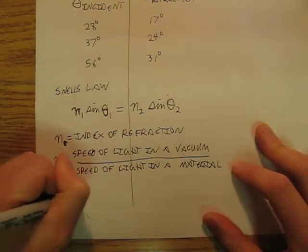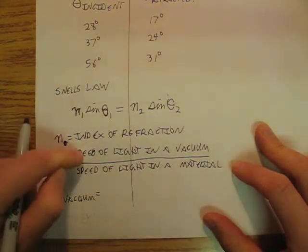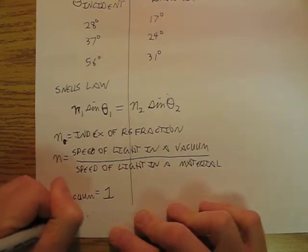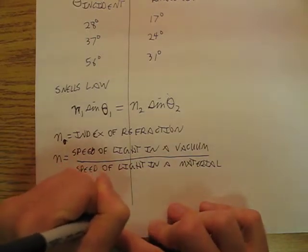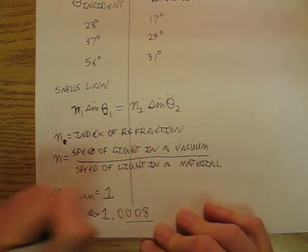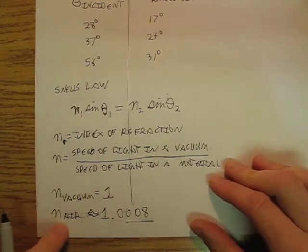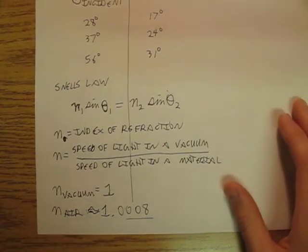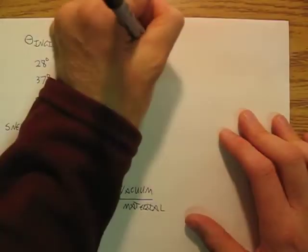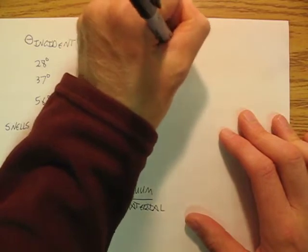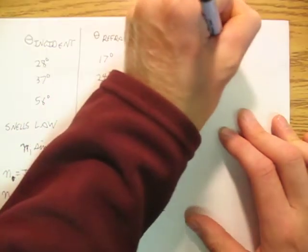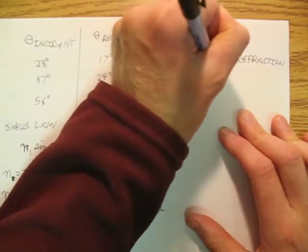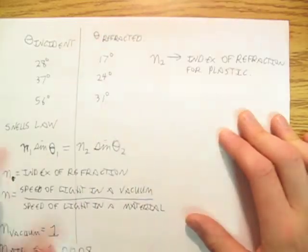So N for a vacuum would be the speed of light in a vacuum divided by the speed of light in a vacuum, so that's going to be 1. And then N air is going to be very close to 1, it's going to be 1.0008 or something like that. So for N for air, air is very close to being a vacuum, so it's very close to being 1. So N2 for my experiment is index of refraction for plastic, for the plastic that I used in the lens.